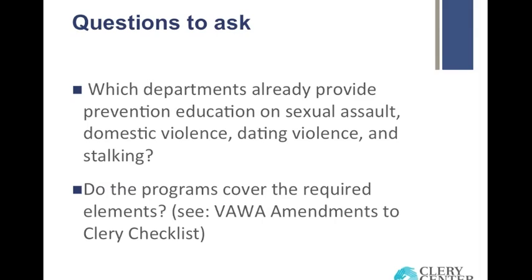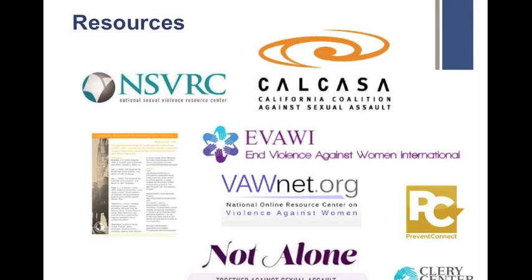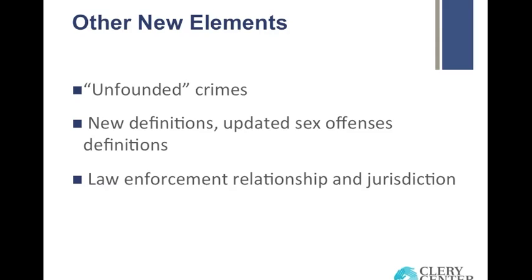When thinking about risk reduction, one of the pieces involved in those definitions is options designed to decrease perpetration and bystander inaction, and increase empowerment for victims in order to promote safety. It's really looking beyond just a victim or survivor, and moving away from the culture that blames a victim, instead moving towards how we as a campus community intervene if we see a problem and work to build cultures of respect within our own campuses. There are resources shared through the White House Task Force and through the TA Campus Grant Program — make sure you're tapping into what's available both within your state and nationally to help address these areas.